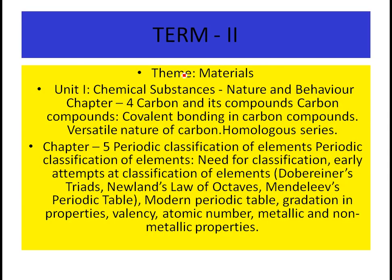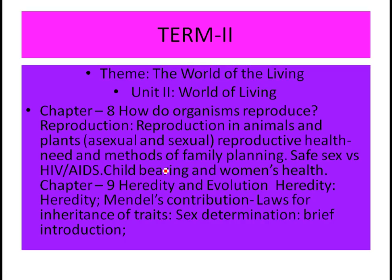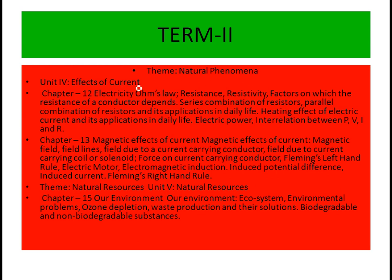For term second, under the theme material, it covers chapter 4 — carbon and its compounds, and chapter 5 — periodic classification of elements and periodicity in properties. Under the theme world of living: chapter 8 — how do organisms reproduce, and chapter 9 — heredity and evolution. Under natural phenomena, unit four — effect of current: chapter 12 electricity, chapter 13 magnetic effect of current. Under natural resources, unit five: chapter 15 — our environment.